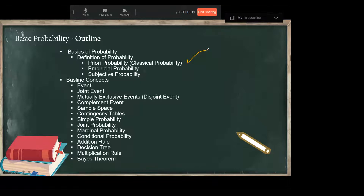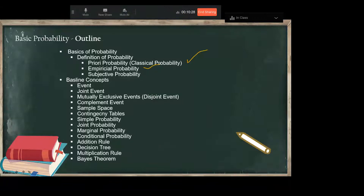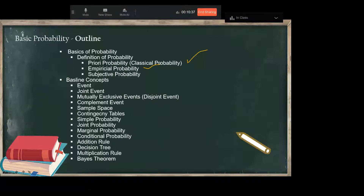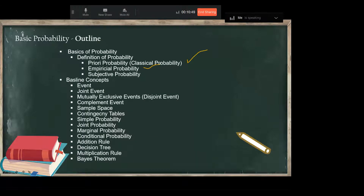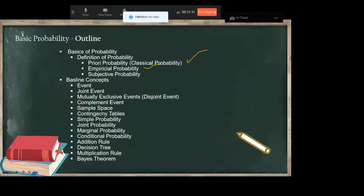Then we will talk about empirical probability, which is totally based on experimental observation — what is an experiment, what is an event, what is an observation. Prior or classical probability is totally based on knowledge we already have, whereas empirical probability is totally based on observed data. You can get it from surveys — every time we run an experiment, we collect the frequency first and then from that frequency we find out the probability.